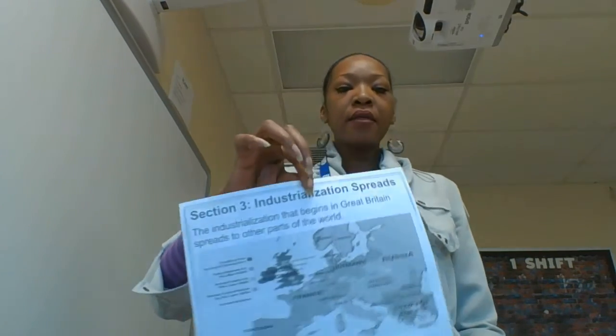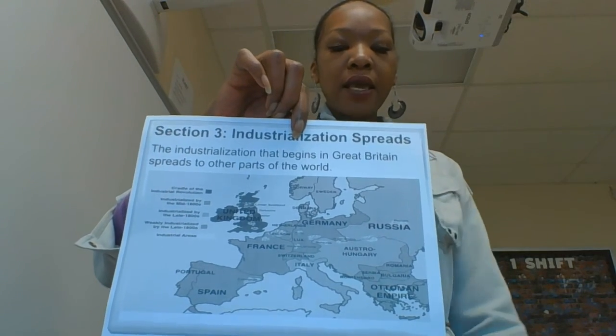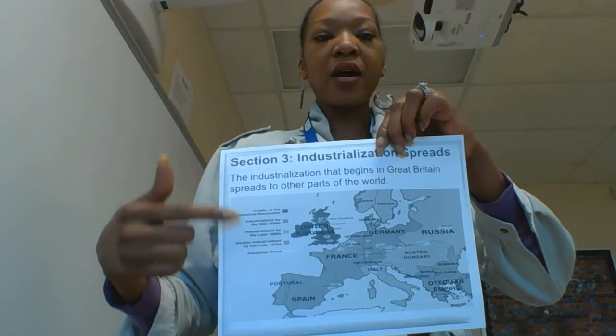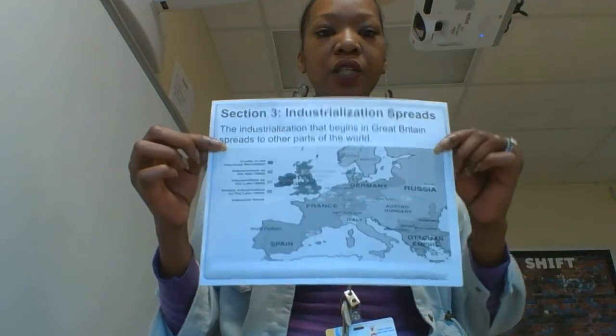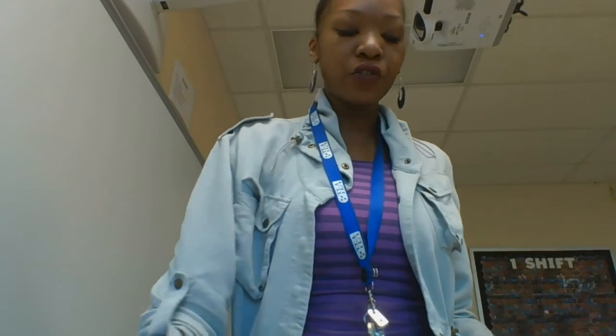The Industrial Revolution spreads. It begins in Great Britain but goes to other parts of the world. This map is definitely going to be on the quiz, and I'm going to ask questions about it, so be sure you can read it and be familiar with the legend. The legend shows: the cradle of the Industrial Revolution, industrialized by the mid-1800s, industrialized by the late-1800s, weakly industrialized by the late-1800s, and the industrial areas.